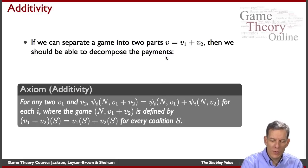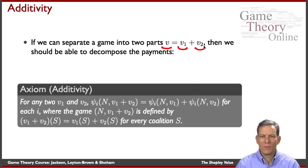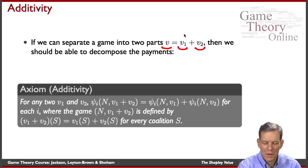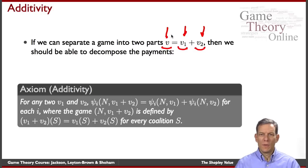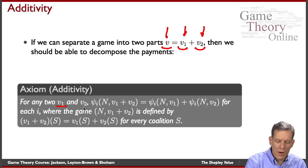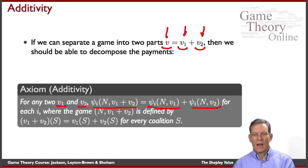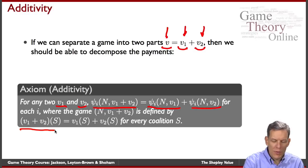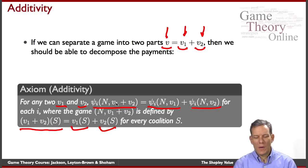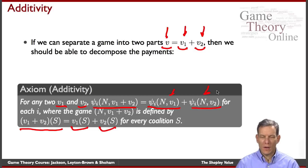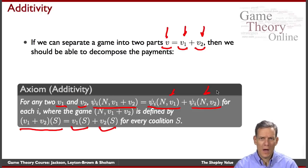The next axiom is additivity. Suppose we can think of a cooperative game that separates nicely into two different parts: game v1 and game v2. We then think about what happens when we sum them together. The idea is that if we're looking at two different cooperative games and we try to allocate when we sum them up, we should get the same result as allocating according to the first game, allocating according to the second, and then adding those two allocations up. If the value for any coalition is what it gets under game one plus game two, the allocation should equal the allocation under game one plus the allocation under game two.